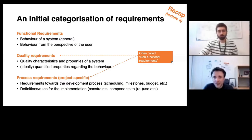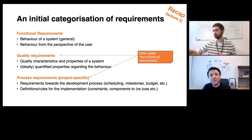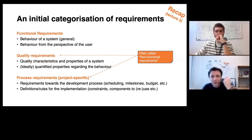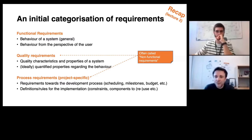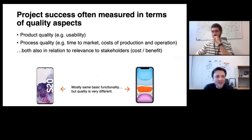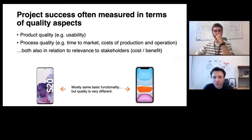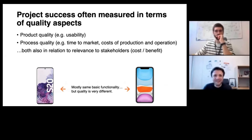Different requirements classes have different concerns and therefore require a different way of handling them — ranging from elicitation over refinement, classification, and verification. A simple example: take a constraint on the implementation, such as 'this programming language must be used — for example Java,' and compare this with more usability-oriented needs by the end user. We approach both classes very differently, which is what we mean by 'concern.' More generally, project success is often measured in terms of quality, and we can distinguish two perspectives: product quality — covering attributes such as usability, performance, security, safety, reliability, and availability — and process quality, including time and cost of production, operation, maintenance, and evolution.